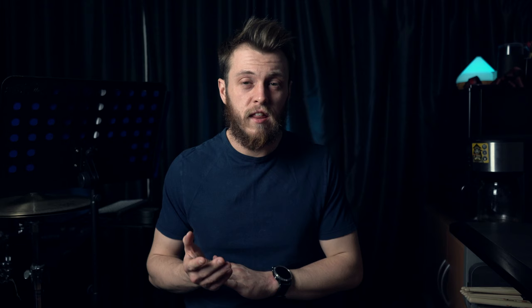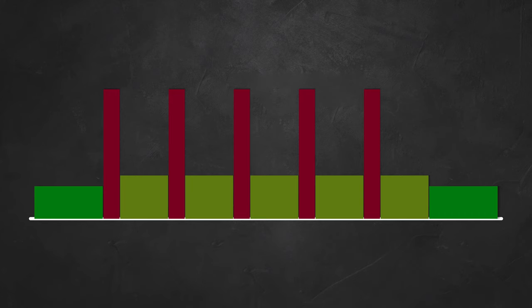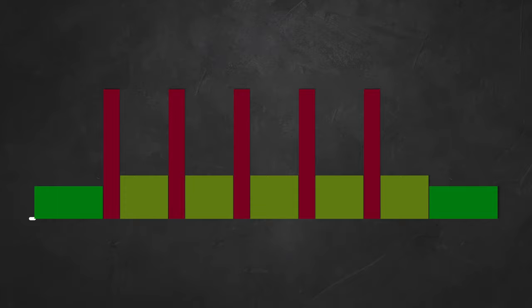The basics of interval training are that you have a predetermined set of high intensity bursts. These can be either distance based or time based, and they are interspersed with rest or recovery periods in between. A super easy example is 20 seconds flat out, 40 seconds easy, repeated five times. Or if you want to do it by distance, 200 metres flat out followed by 800 metres easy. That's a really simple explanation of what an interval is.